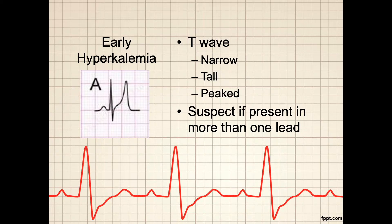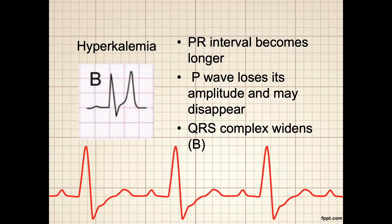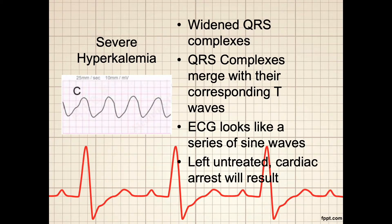As hyperkalemia becomes more pronounced, so too will the ECG change — the PR interval becomes longer, the P wave loses its amplitude and may completely disappear, and the QRS complex starts to widen. Notice also the height of the T wave in comparison to the R wave. With severe hyperkalemia, you notice the widened QRS complexes, and further, the QRS complexes merge with the corresponding T waves. This makes the ECG look like a series of sine waves. Left untreated, cardiac arrest will result.